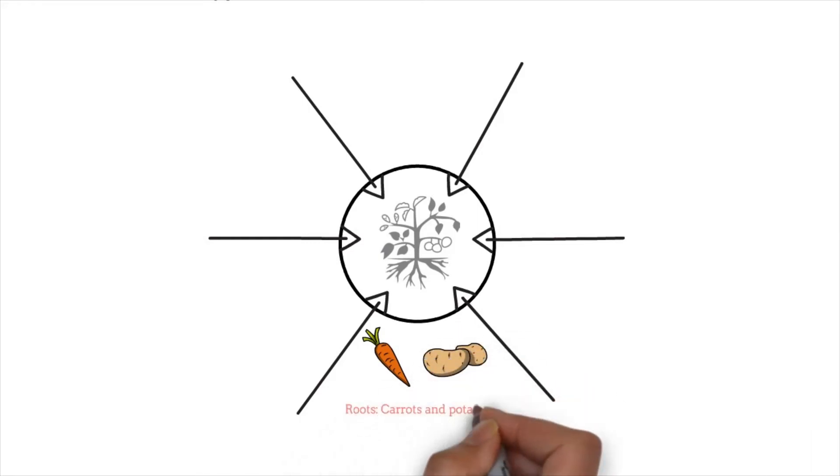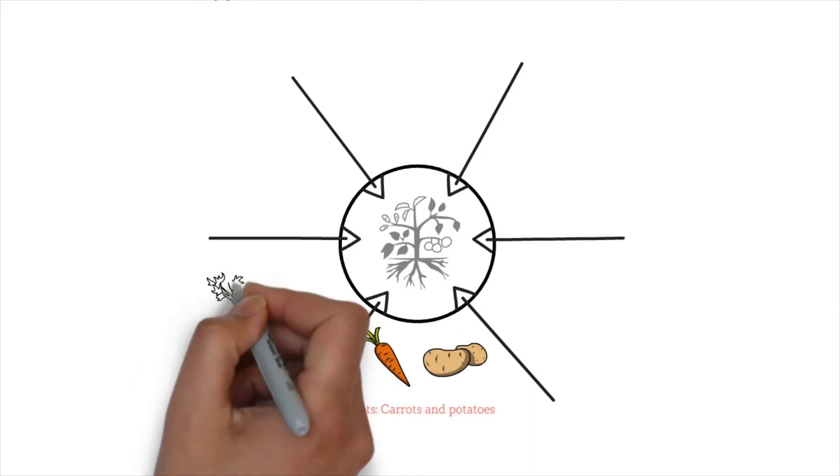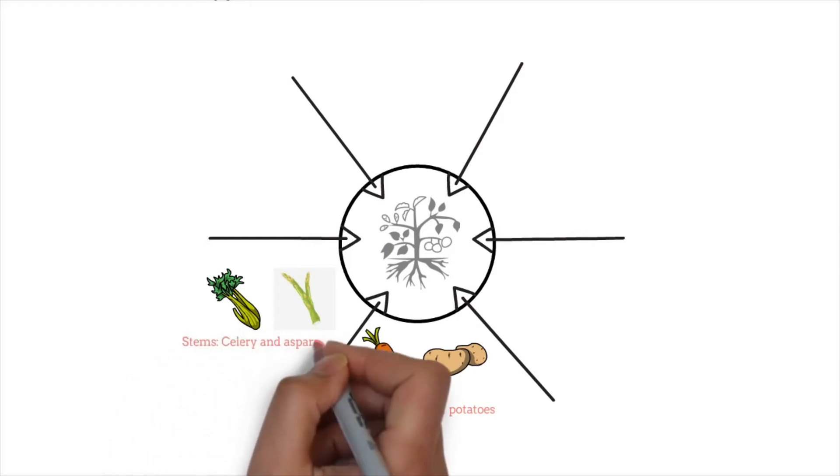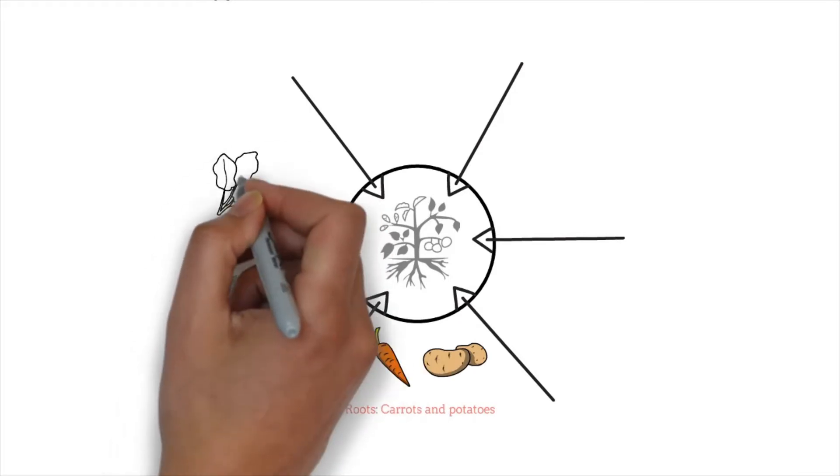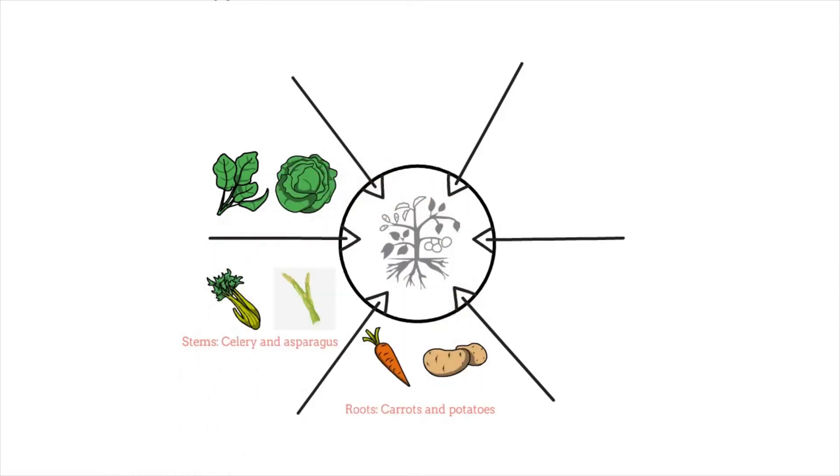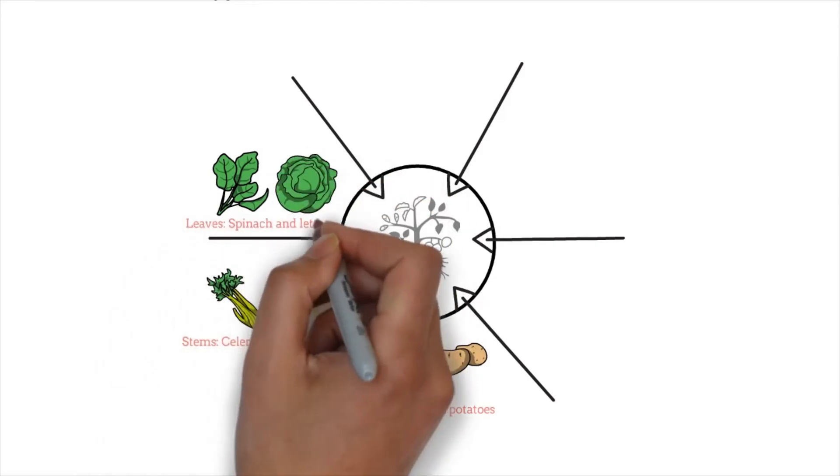Roots: carrots and potatoes. Stems: celery and asparagus. Leaves: spinach and lettuce.